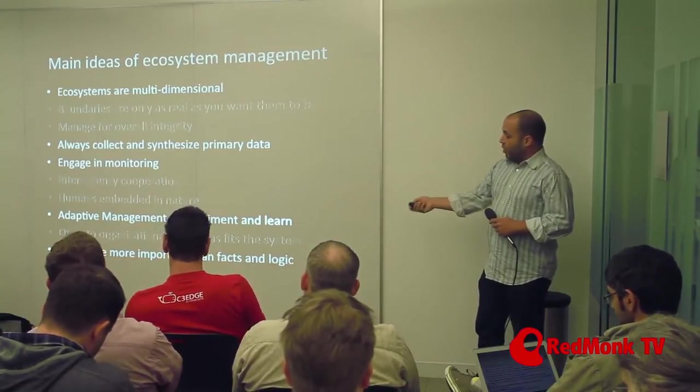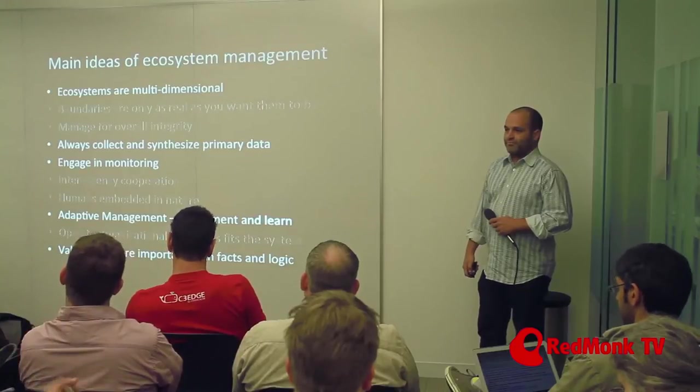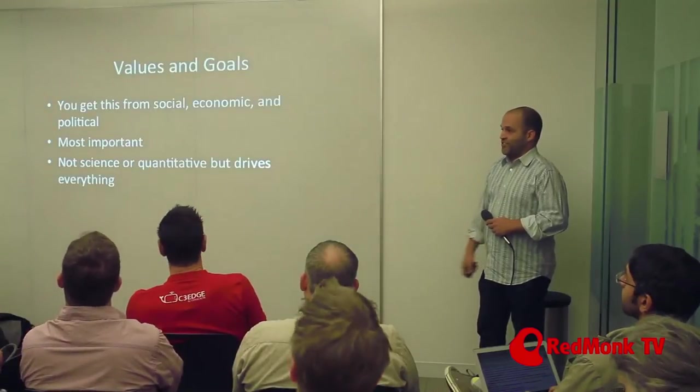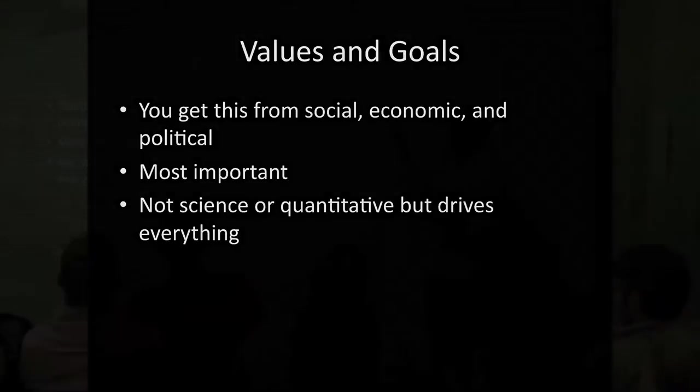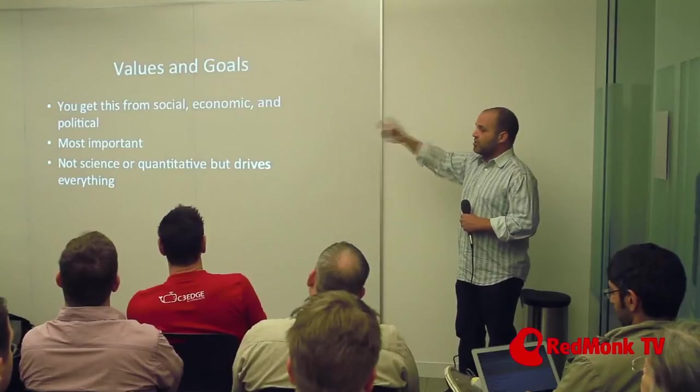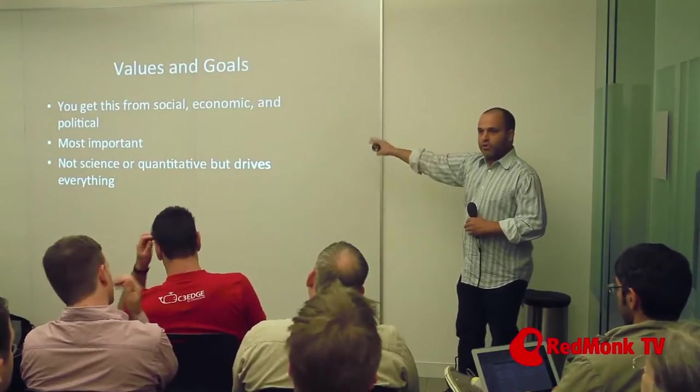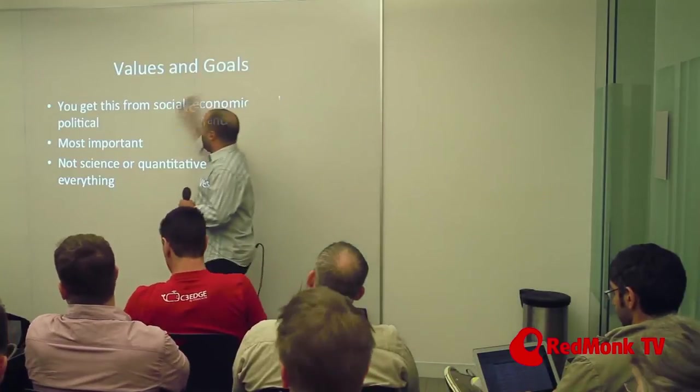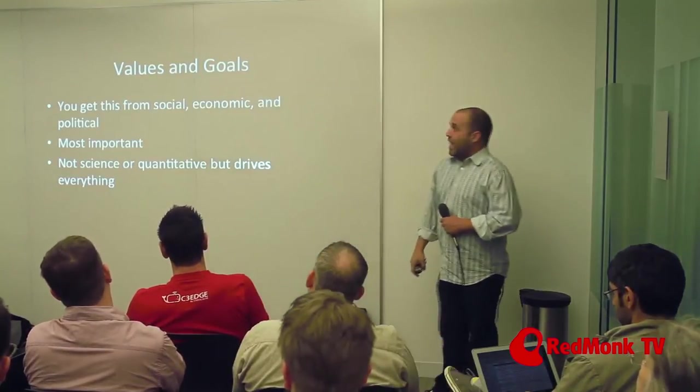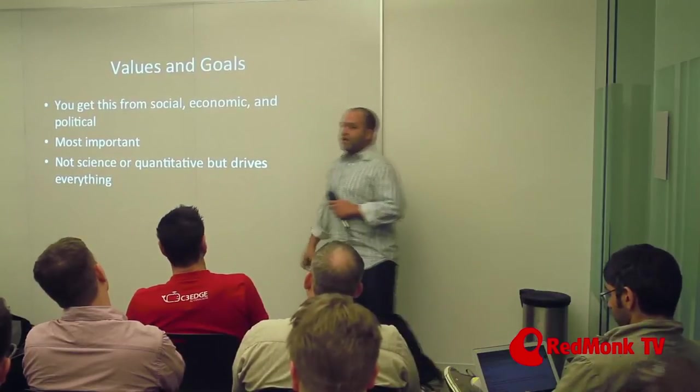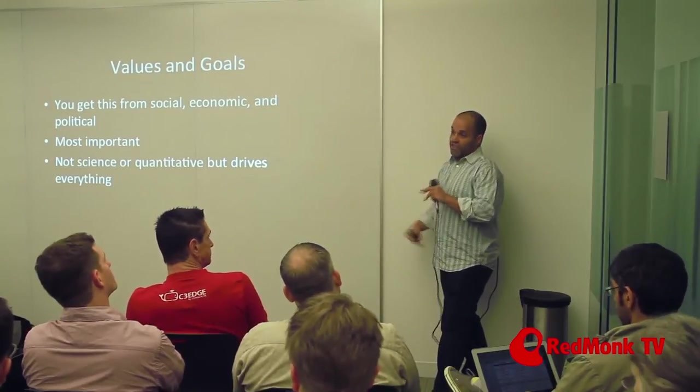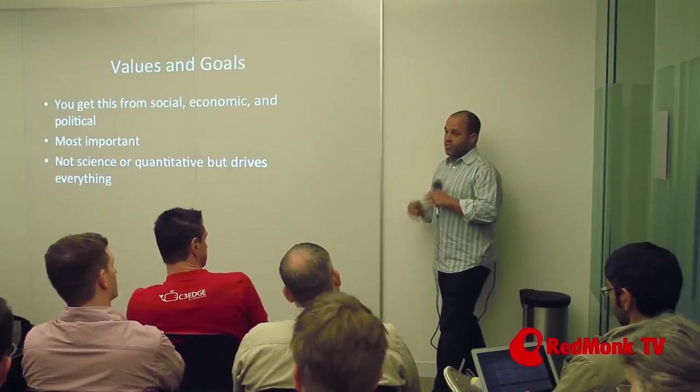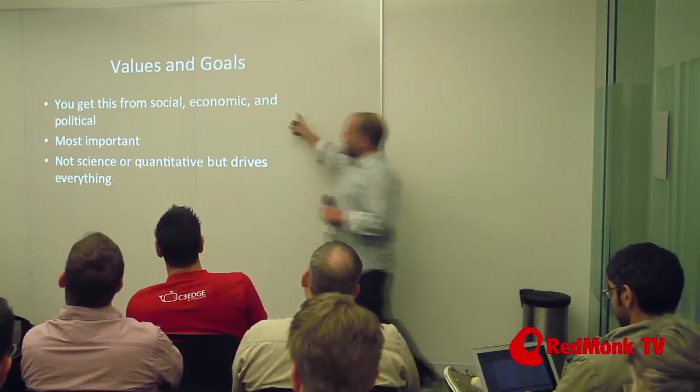And then the last thing was values are more important than facts and logic. Which is not science. So I'm going to talk about values and goals for one slide. And this is the part you, as an ecosystem manager, if you're running a developer ecosystem or some other type of ecosystem, need to get done all by yourself. And this is where you read management books and you read political science and you read sociology books and psychology books. Because you get values and goals from social, economic, and political. Right? And economic, I don't even think my economist professor would always say, economic doesn't teach you what's right or wrong.